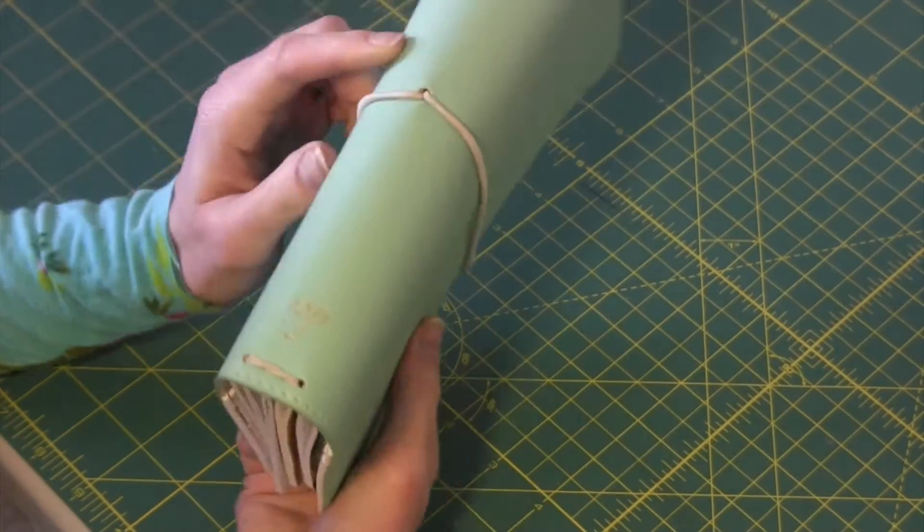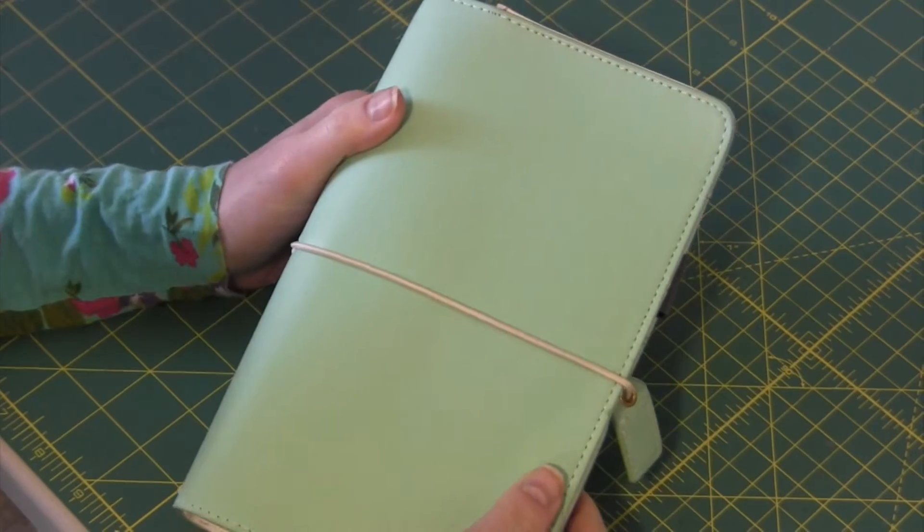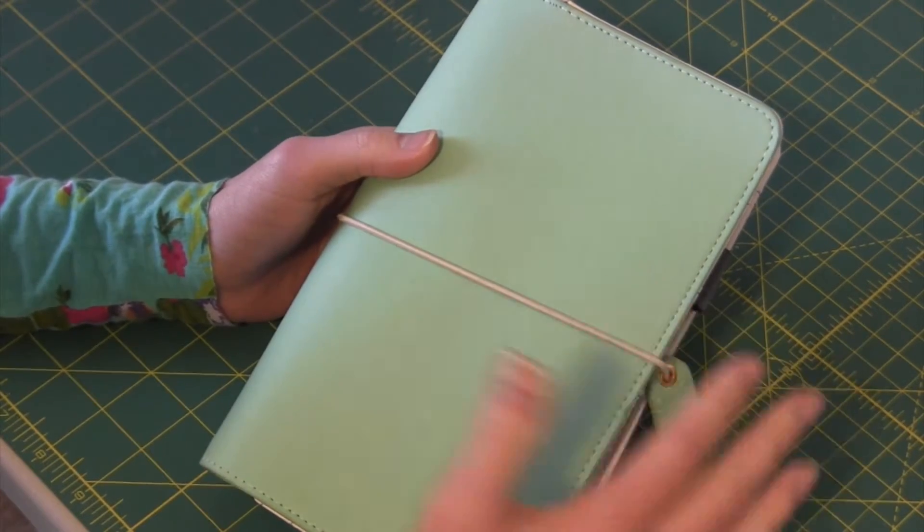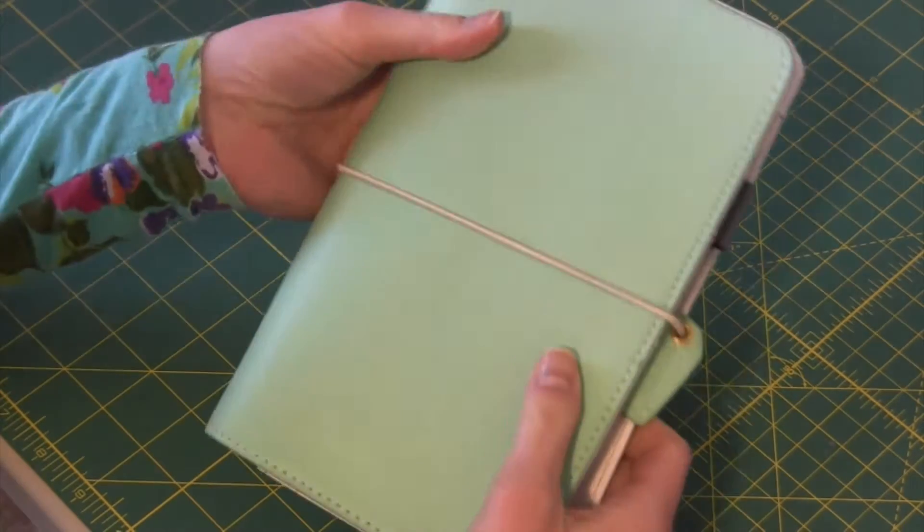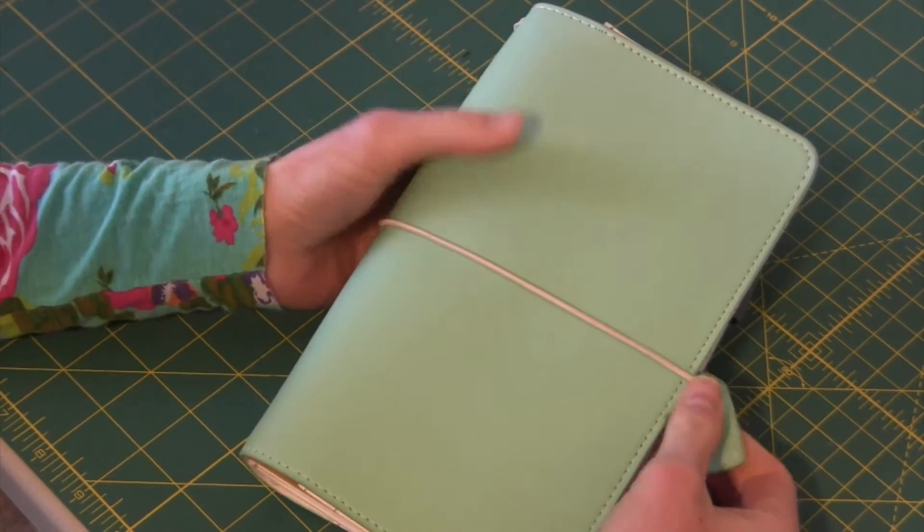Some traveler's notebooks have this thing in the back. Again same concept, but the thing that sets traveler's notebooks apart from other types of regular journals is the ability to hold multiple books in it and I'm going to open it up and show you.